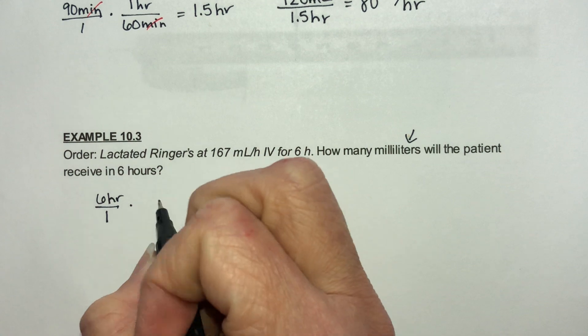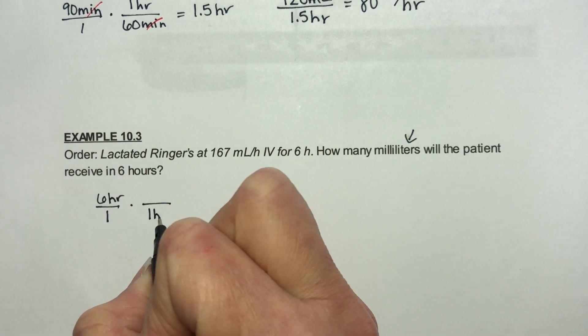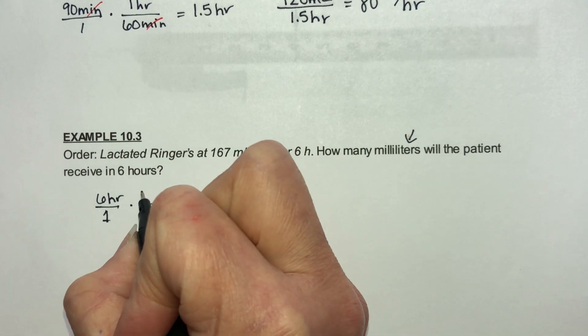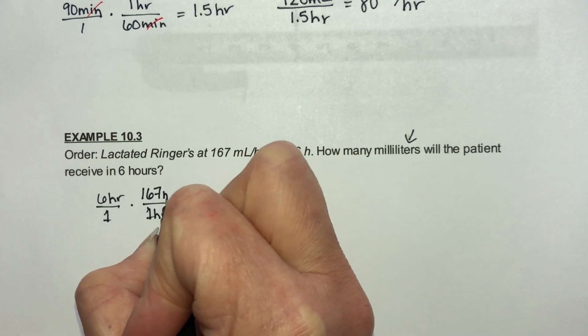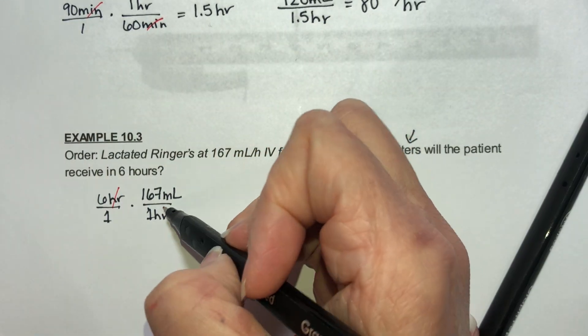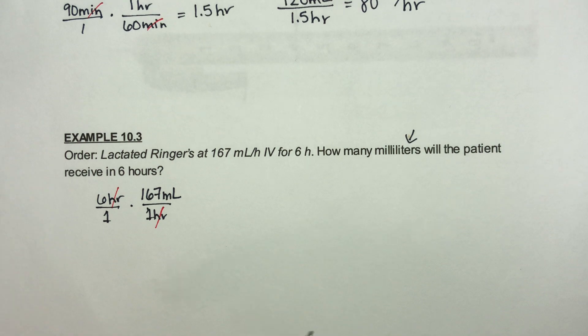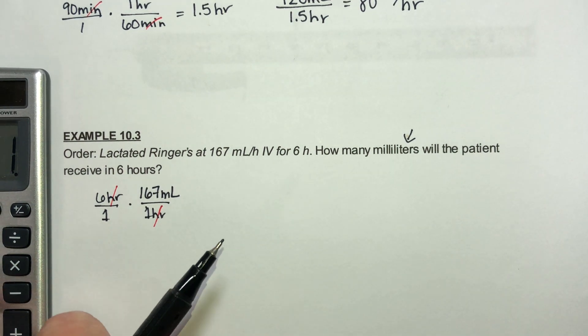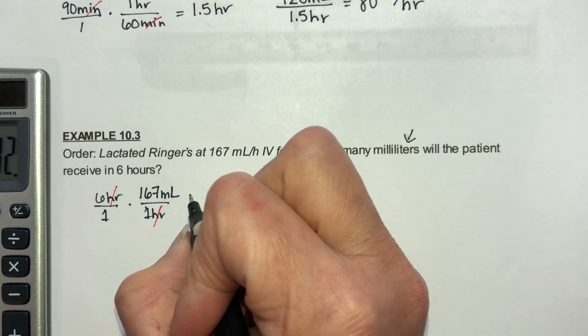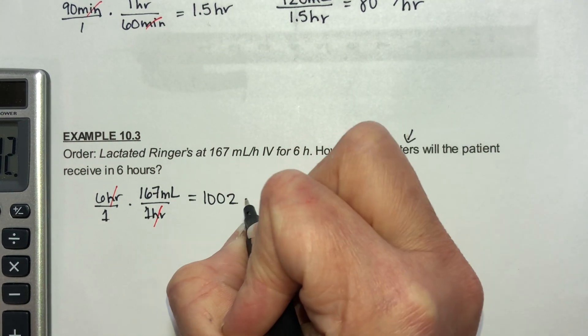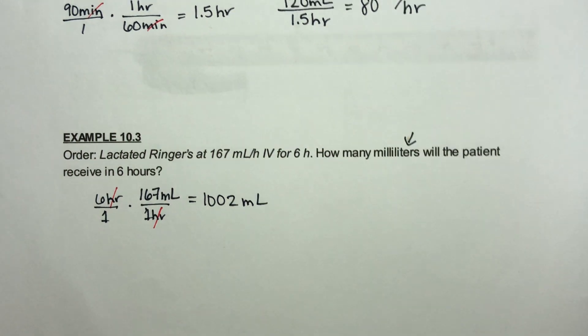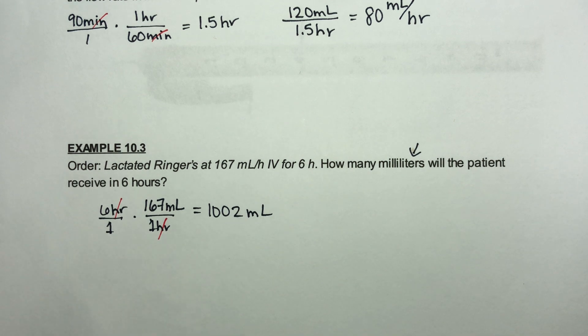If I put this over 1, I'm trying to cancel out hours so I'm going to put 1 hour in the bottom and then 167 milliliters in the top. The hours cancel and all we have to do now is to multiply 6 times 167 to get 1,002 milliliters. So that is how much that patient should receive in 6 hours total.